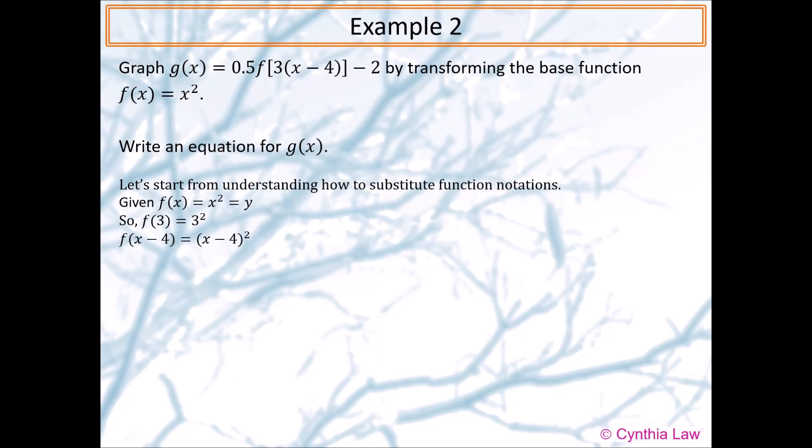f(x - 4) means we have (x - 4)². f[3(x - 4)] means that we have that big bracket of everything squared.